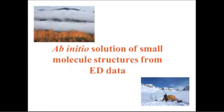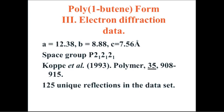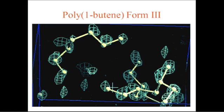So let's have a look at electron diffraction. Here's a structure — some Doug Dorsett's data — a very typical sort of thing. It's actually three-dimensional data, so it's only got 125 unique reflections. You can solve that in a matter of a few minutes.